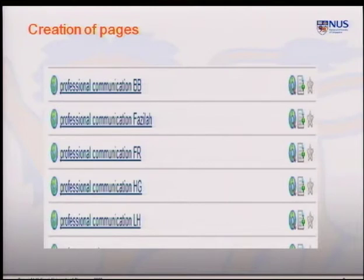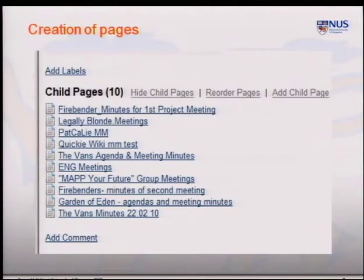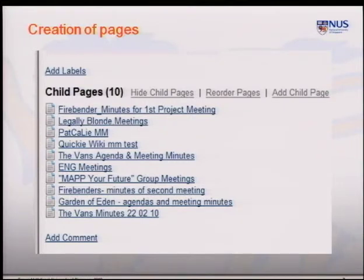This is what our initial wiki pages look like for each one of our tutors. In this course we have five different tutors with a number of different tutorial groups each, so each tutor has their own general wiki page. Within each tutor's wiki page we have the different tutorial groups. Going further, you would see the different assignments — and this specific view shows down to the meetings, the wiki page for meetings for all tutorial groups over two semesters.